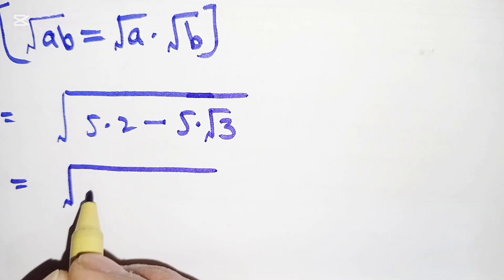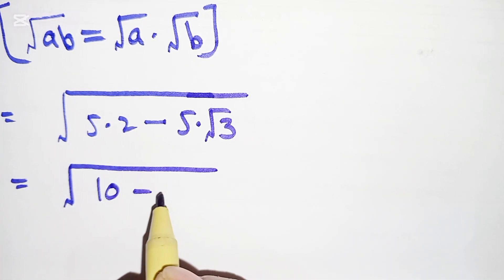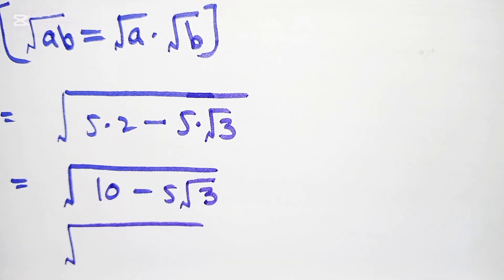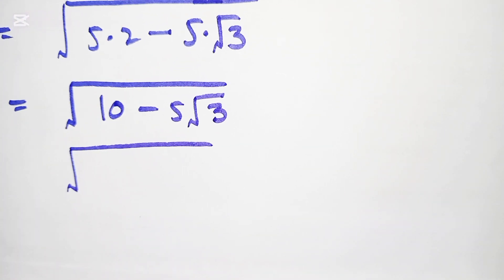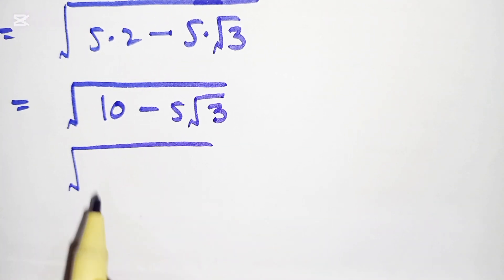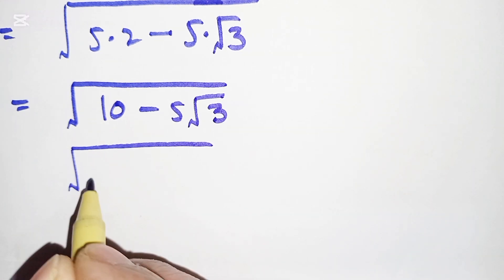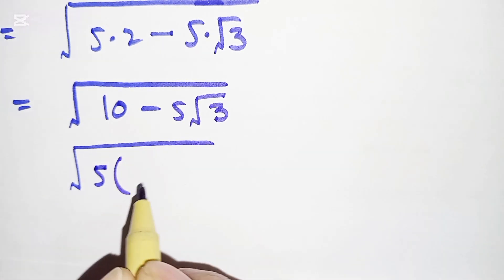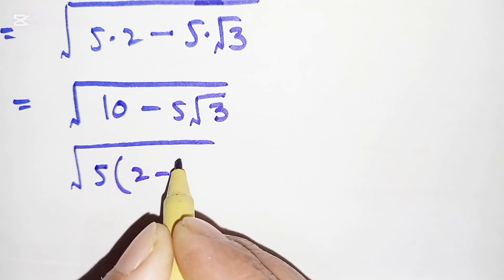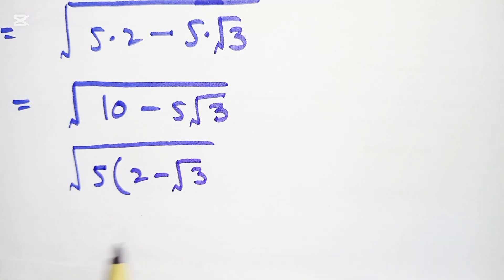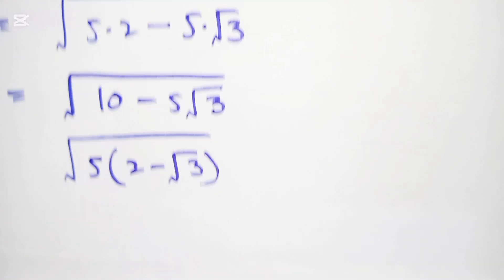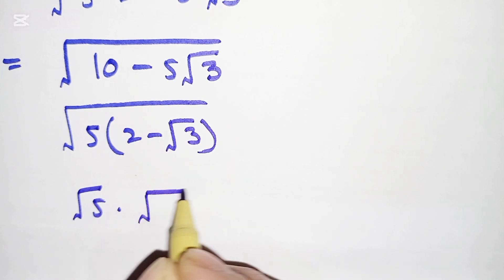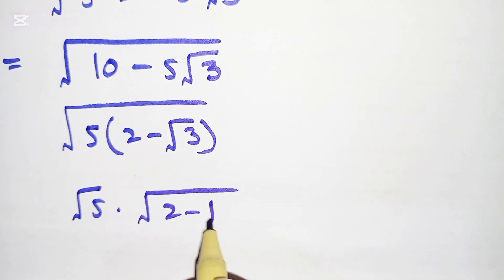So we get 5 times 2, minus 5 times √3. Now we take √5 common, giving us √5 times (√2 minus √3).